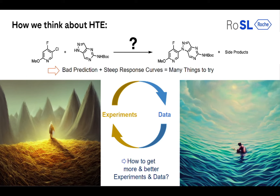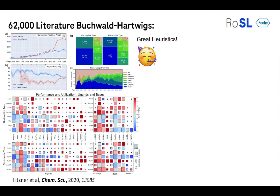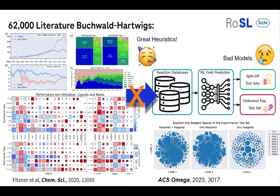So HTE is all about how you get more and better experiments, and especially how you get more and better data. Why is data so important? In literature you'll find over 62,000 examples of Buchwald-Hartwigs — this reaction is well described. However, to actually build AI and machine learning predictions from this data is super difficult. It works with some test sets, but for your specific substrate, these models nowadays still tend to fail.